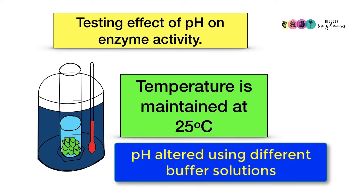When you wanted to test the effect of pH on enzyme activity, we maintained temperature at a constant 25 degrees Celsius by using a water bath, and this was checked using a thermometer. We altered pH by using different pH buffer solutions, and this was for the same reason. We only wanted to alter pH. We wanted to prove that any change in the rate of reaction was solely down to the pH altering and not down to any other factor.